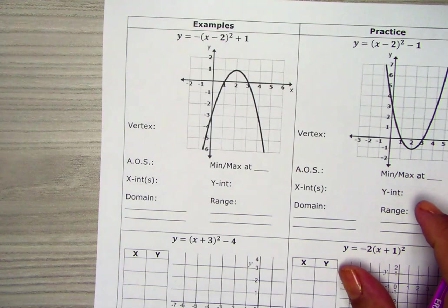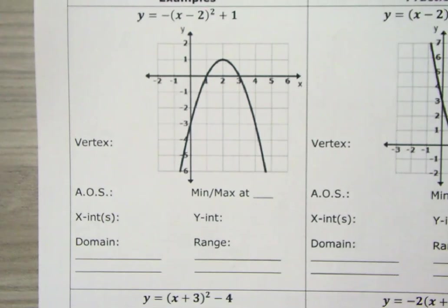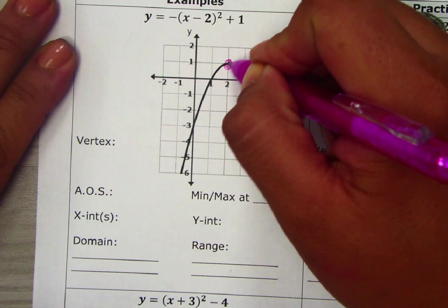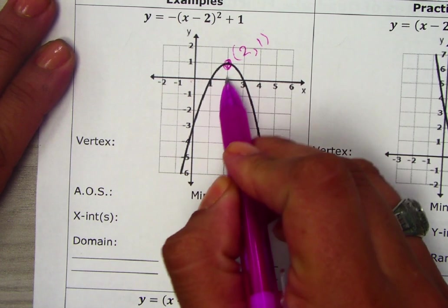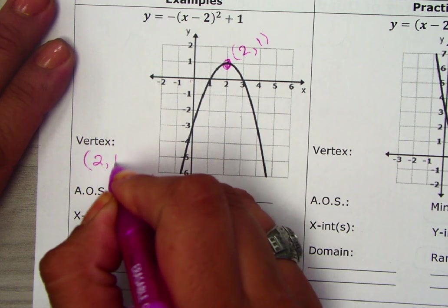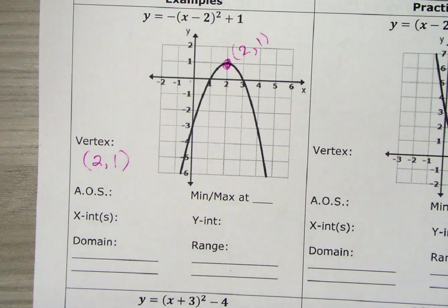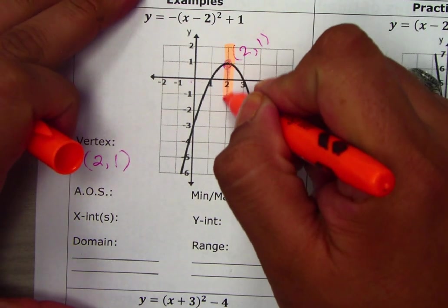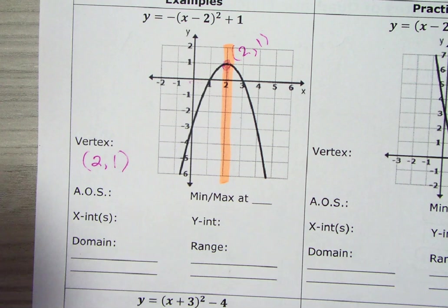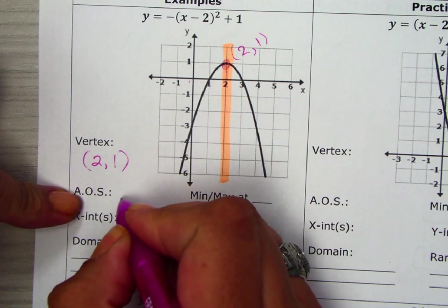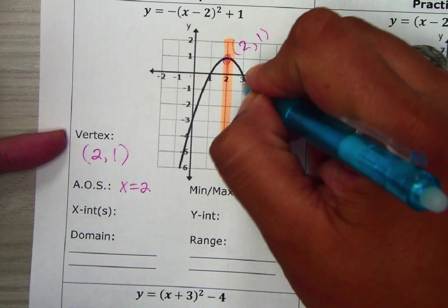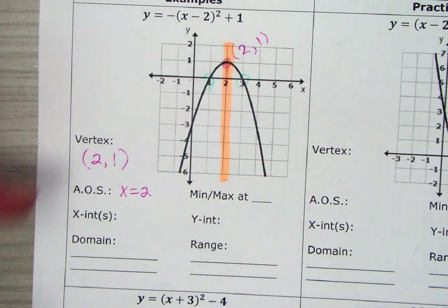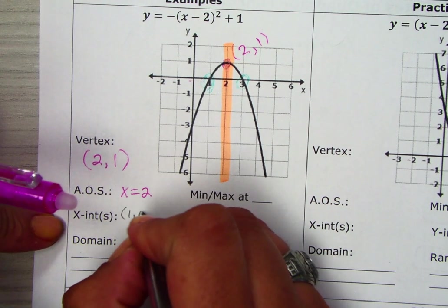On this first example, the graph is showing that the vertex is going to be at this point right here — an ordered pair of (2, 1): two to the right, one up. So we're going to have vertex (2, 1). The axis of symmetry will be the line that cuts it in half, so we draw a vertical line going through the x-value at 2, giving us x equals 2. The x-intercepts are touching at positive 3 and positive 1, so we write those as (1, 0) and (3, 0).